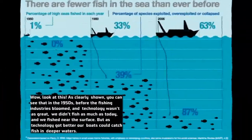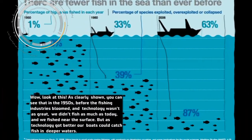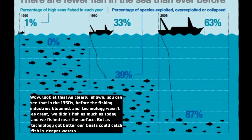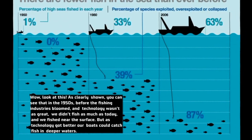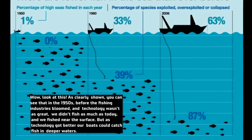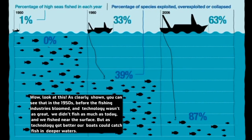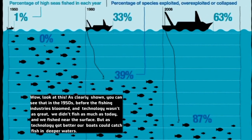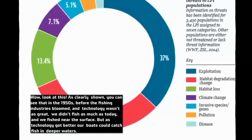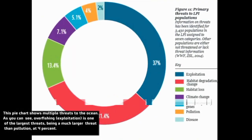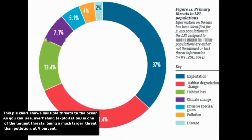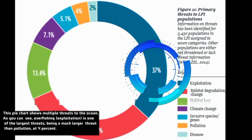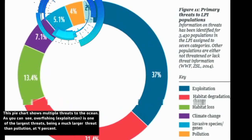As clearly shown in this visual, in the 1950s before the fishing industry boomed, we didn't fish as much and we fished near the surface. As technology got better, our boats could catch fish in deeper waters. This pie chart shows multiple threats to the ocean — as you can see, overfishing is one of the largest threats, being much larger than pollution at four percent.